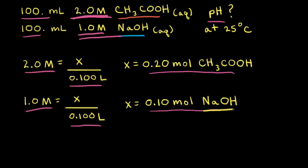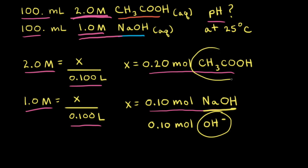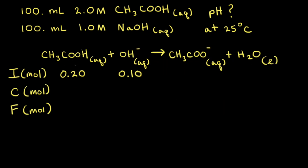Because NaOH is a strong base, it dissociates 100%. So if there are 0.10 moles of NaOH, there are also 0.10 moles of hydroxide ions, OH⁻, in solution. The hydroxide anions will react with acetic acid. Our next step is to look at the net ionic equation: acetic acid reacts with hydroxide anions to form the acetate anion and water. Because this neutralization reaction goes to completion, we draw an arrow going to the right instead of an equilibrium arrow.